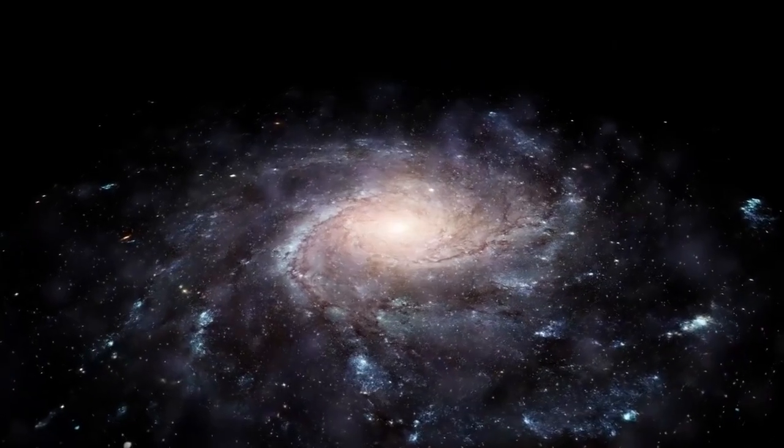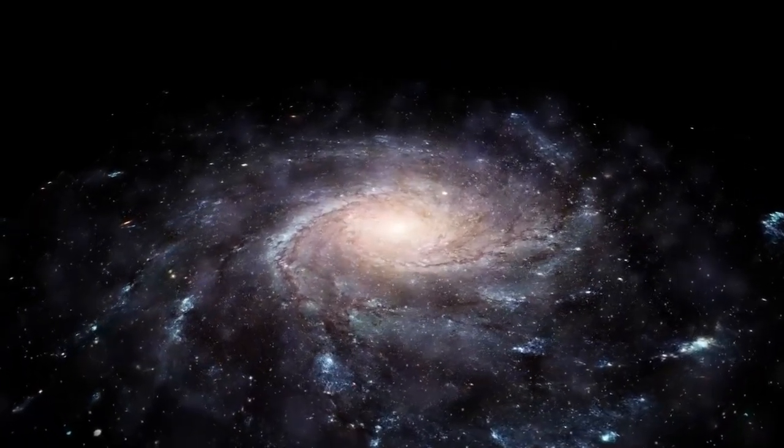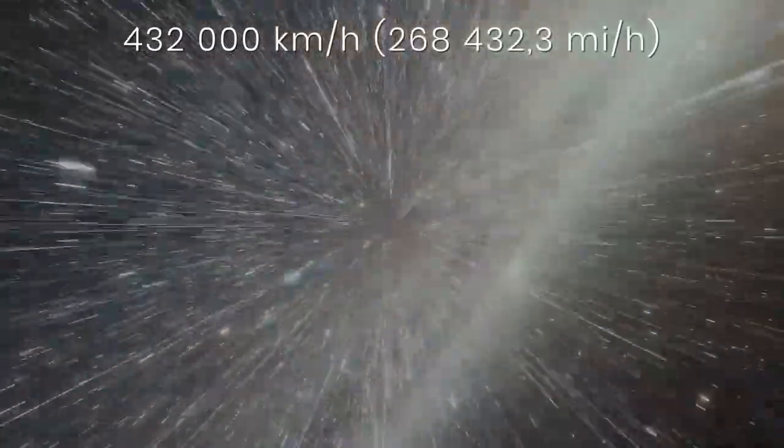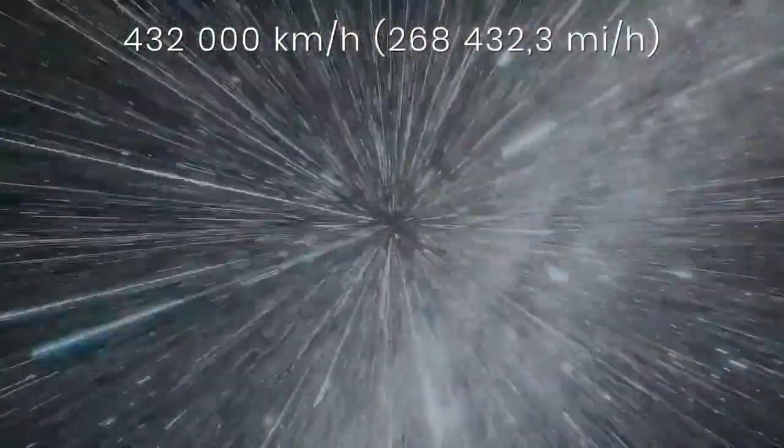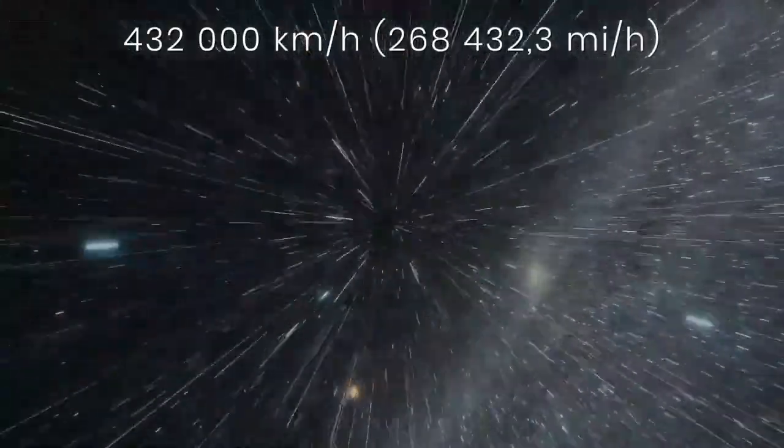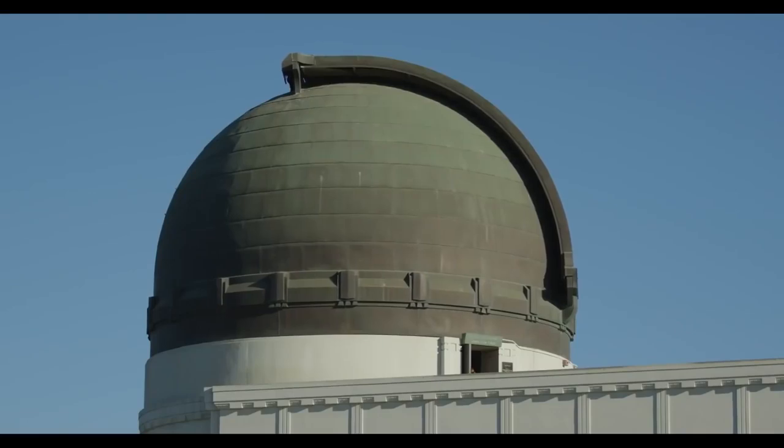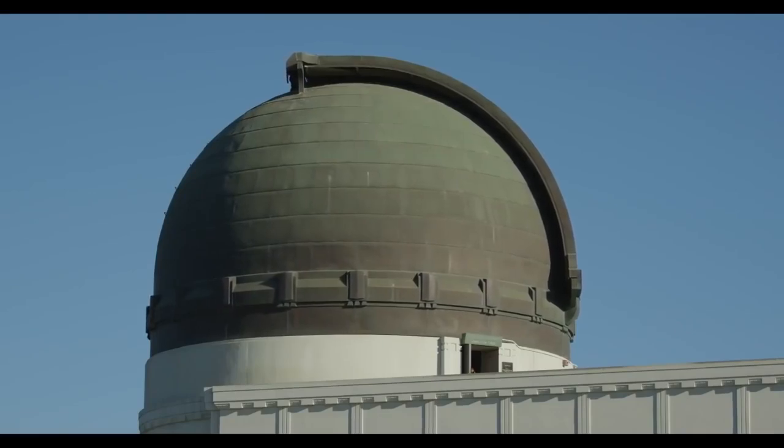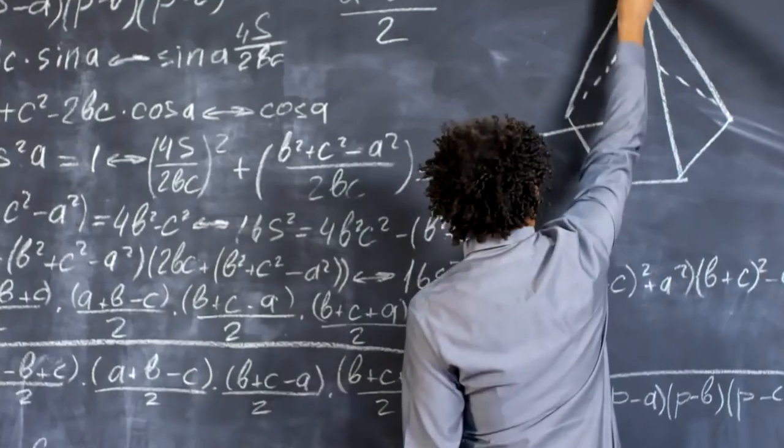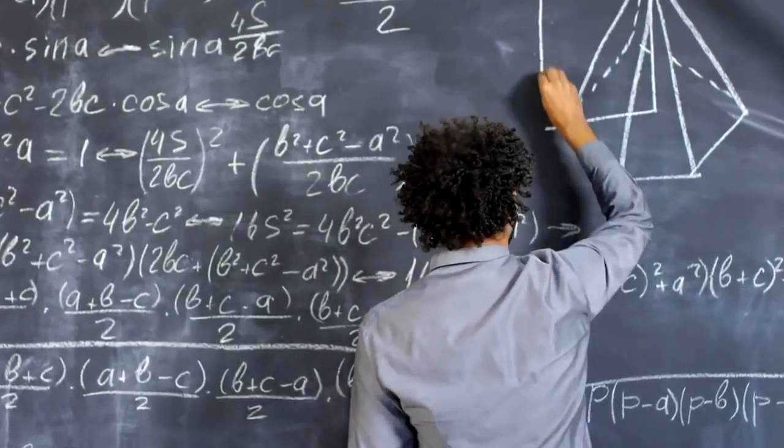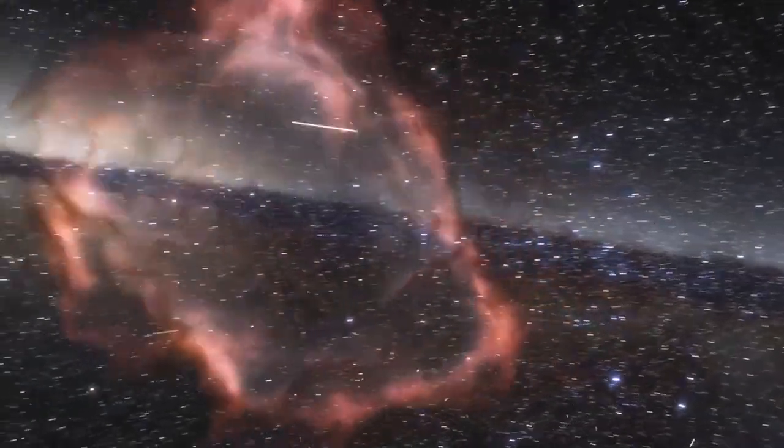The Andromeda galaxy is heading towards us at an insane speed of 120 kilometers per second. It's not known if this speed will change in the future. Both galaxies are roughly the same size. This means that the result of the collision is unpredictable, but scientists still have time to guess what it will be like. Previously, it was assumed that the collision would occur in 5 billion years.